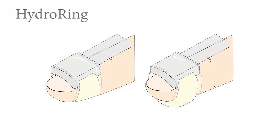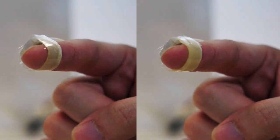This prototype, called HydroRing, was implemented using a hydraulic circuit which pumps water through a thin latex tube worn across the pad of the finger.